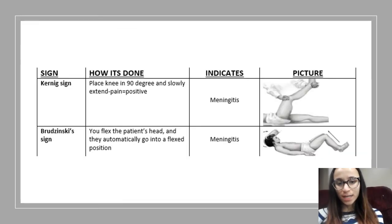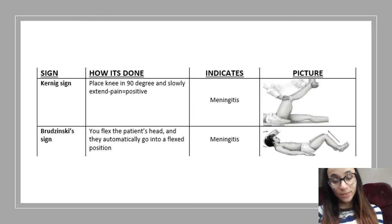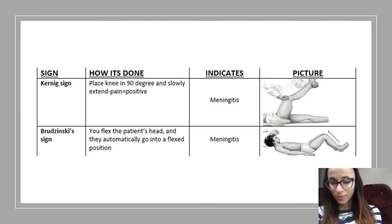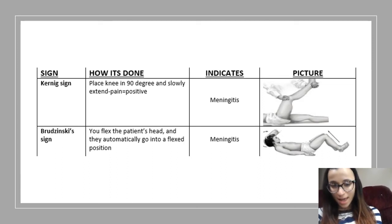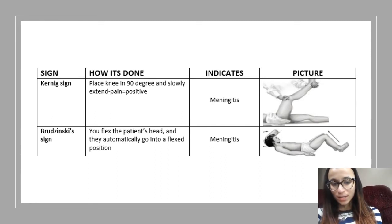Next we'll go on to Kernig's sign. You're going to place their knee at a 90-degree angle and slowly extend it. If there's pain, it's positive, and it's a sign of meningitis. The next one is Brudzinski's sign — you're going to flex the patient's head and they're automatically going to go into a flexed position. This is also going to indicate meningitis. So for meningitis, you want to remember Kernig's and Brudzinski's.